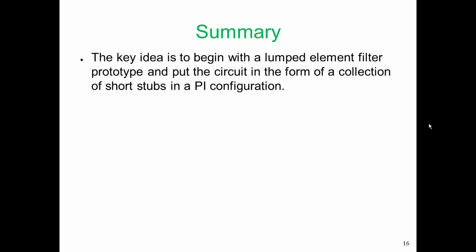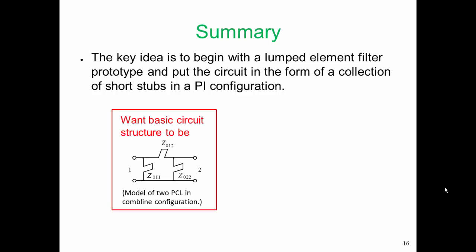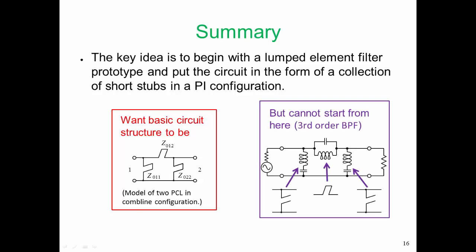In summary, the key idea is to begin with a lumped element filter prototype and put the circuit in the form of a collection of shorted stubs in a pi configuration. This is the model of two parallel coupled lines in a comb line configuration. But we cannot start from this lumped element circuit, because each of the series LC resonators is modeled by an open circuited shunt stub. We're right with the parallel LC circuit that comes out as a shorted stub, and our third resonator is modeled just as our first resonator was with an open circuited stub.